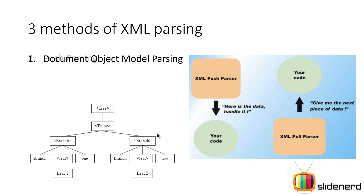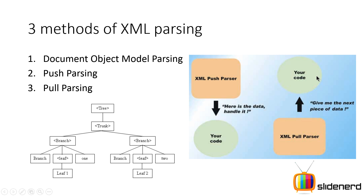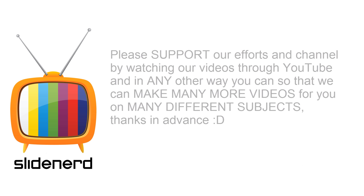The second method is push parsing. Your parser reads the XML document, and as it encounters each opening tag, closing tag, or attribute, it passes that data to your code. The third is pull parsing, which is similar, except your code pulls data from the parser on demand. If you don't understand the difference between push and pull parsing right now, don't worry — there will be separate videos explaining each. The upcoming series will cover DOM parsing, SAX parser, and StAX parser — those are the three types.